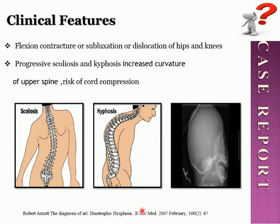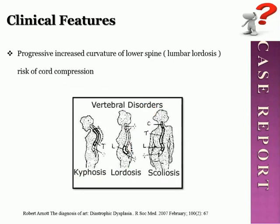Patients also develop progressive scoliosis, kyphosis, or lordosis. As you can see in the diagrams, it is important to differentiate between these three conditions: kyphosis, lordosis, and scoliosis. This is especially important when planning general anesthesia, as these spinal deformities may lead to a risk of spinal cord compression.